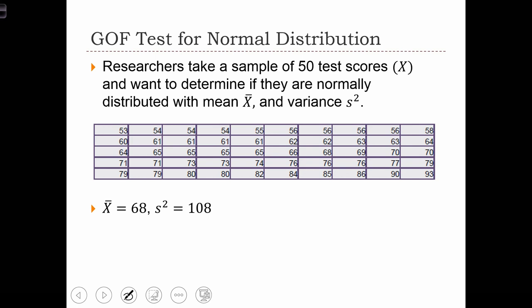In this example, we're going to use a goodness-of-fit chi-squared test to see if a sample of values is normally distributed. So here we have a sample of 50 test scores. These are going to be our x values. And we want to determine if these test scores are normally distributed.